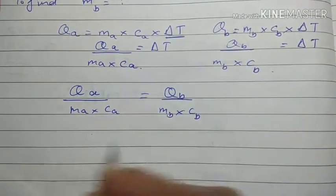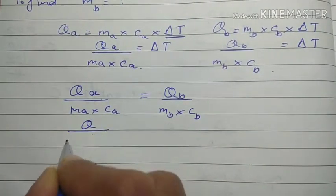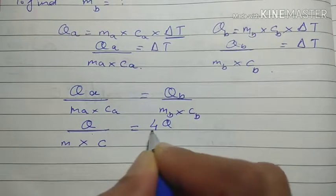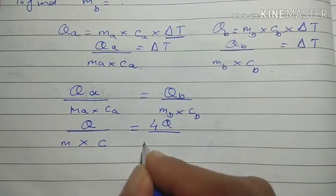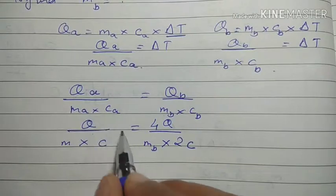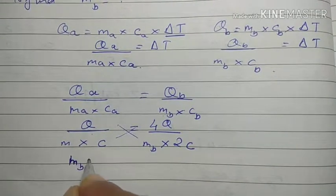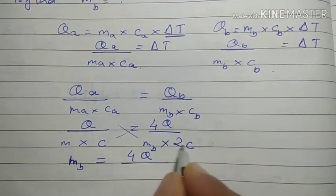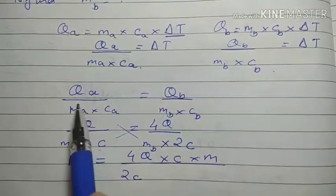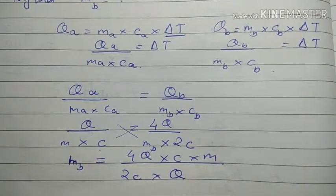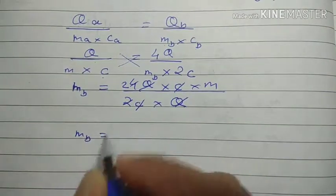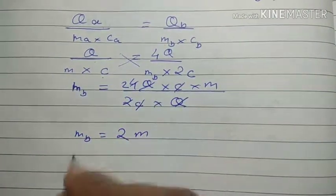Now let's substitute the values. q_A is q, m_A is m, c_A is c. q_B is 4q, m_B is what we want to find, and c_B is 2c. Since we want to find m_B, let's bring it to the top by cross-multiplying. So m_B equals 4q times c times m divided by q times 2c. q cancels with q, c cancels with c, and 4 divided by 2 gives 2. So m_B equals 2m.